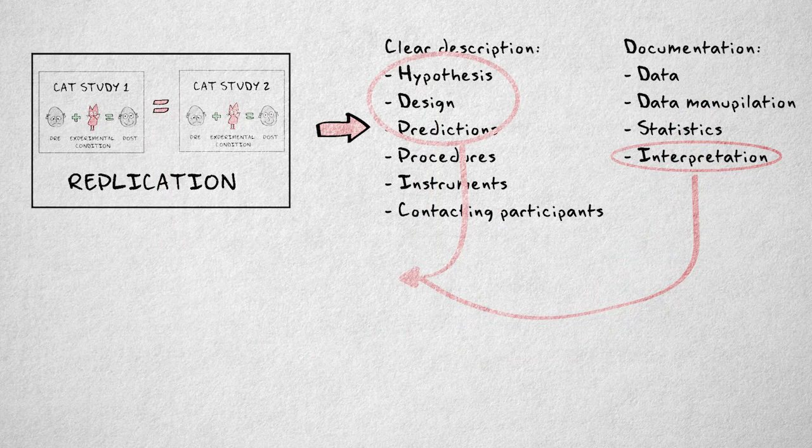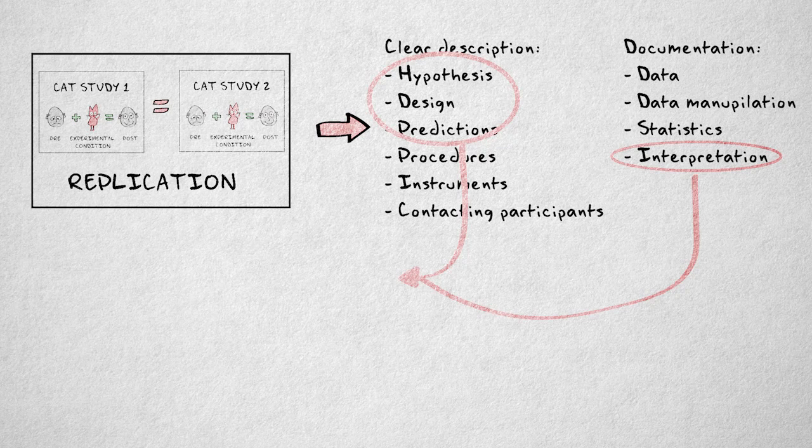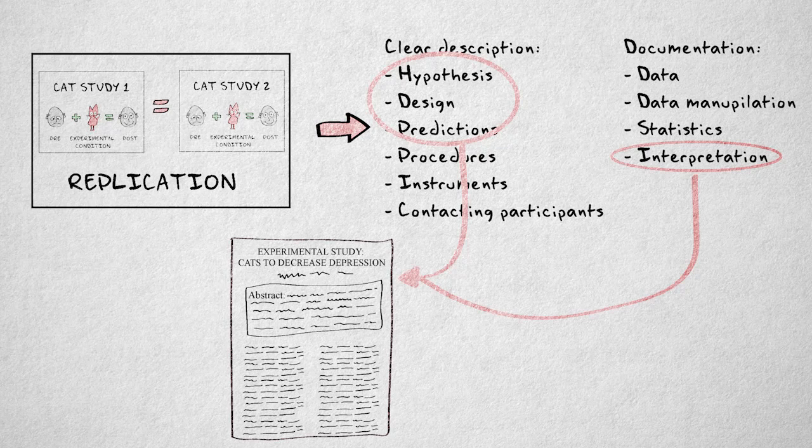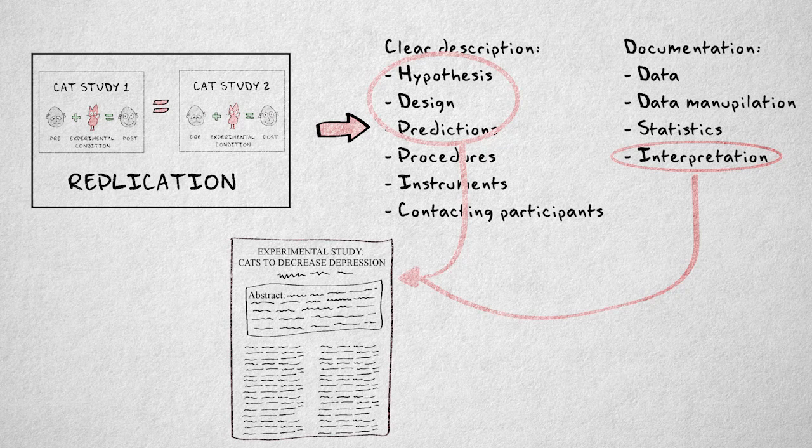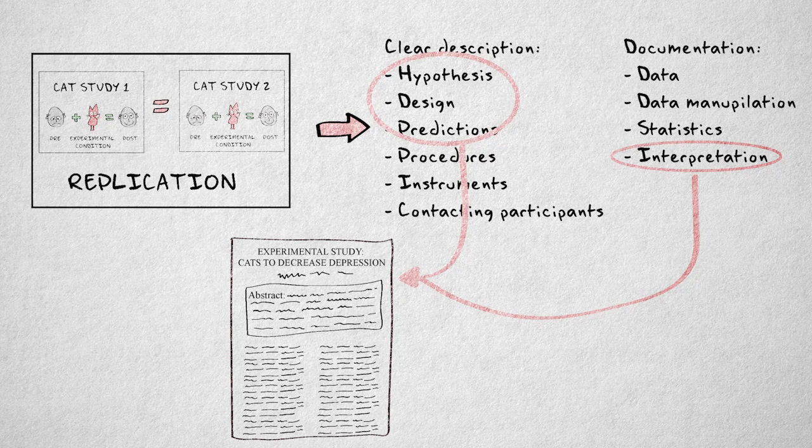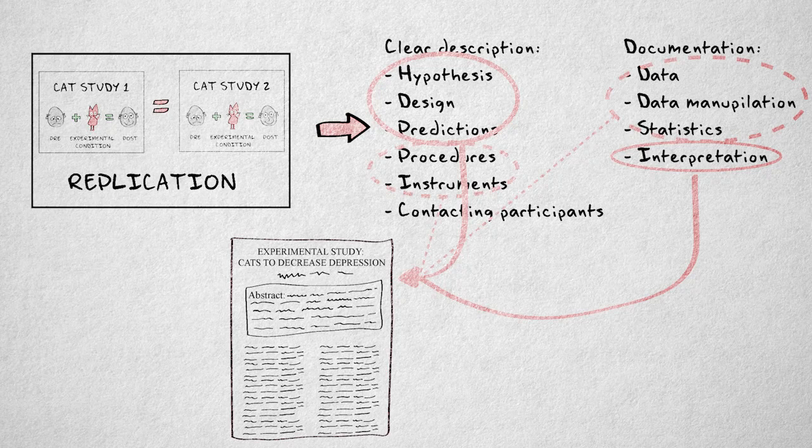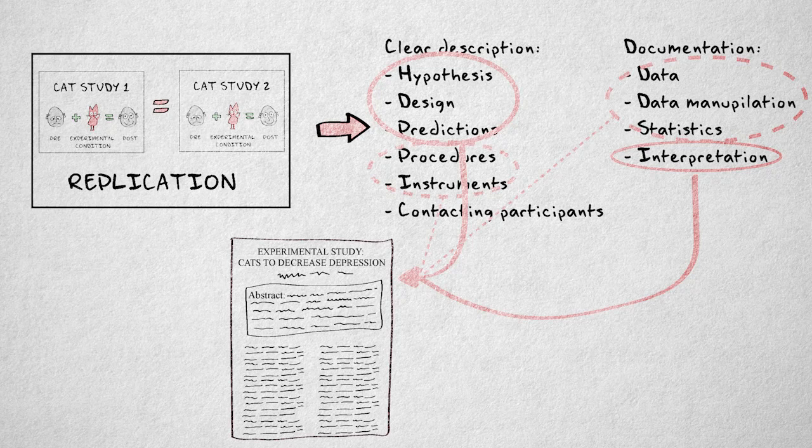The hypothesis, research design, specific predictions, and interpretation of results are generally explicitly stated in a research publication or journal article. Such a document also contains information on the research procedure, instruments, data, data manipulations, and statistics. But this information is always summarized.